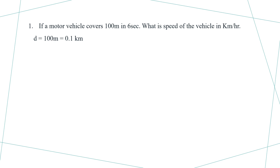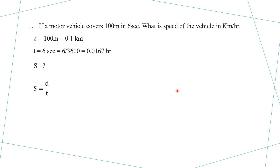100 meters divided by 1000 gives 0.1 kilometer. Time t is equal to 6 seconds, converted to hours: 6 divided by 3600 equals 0.00167 hours. Speed equals distance divided by time, so speed equals 0.1 divided by 0.00167, which gives 59.88 kilometers per hour.